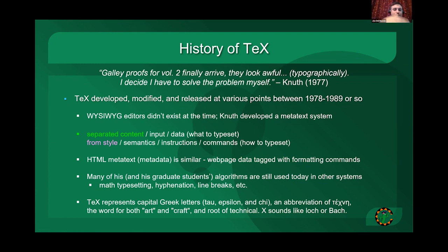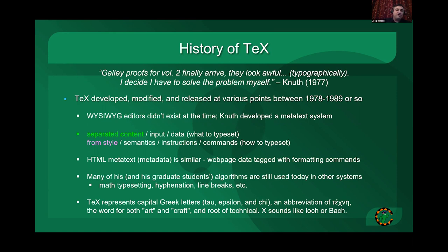So he started working on a program called TeX, and it took him about 10 years, though there were releases within a few years — TeX 83 was a popular one. Within three to five years he was already producing some of it, and he worked on it a total of about eight to eleven years. The biggest thing he did was separate your content from your style. There were no WYSIWYG editors at the time, so he developed what we'd call a metadata-type system where you have text or data interspersed with commands — like a metatext.